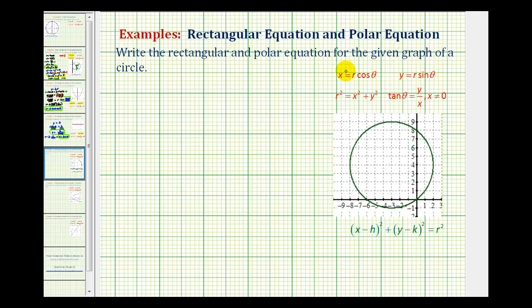We want to write the rectangular and polar equation for the given graph of the circle. We'll write the rectangular equation of the circle using the standard form of the circle given here, where the center of the circle would have the coordinates h, k, and r is equal to the length of the radius of the circle.